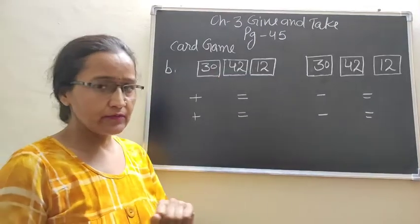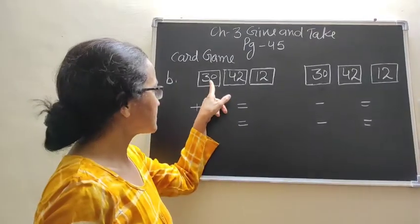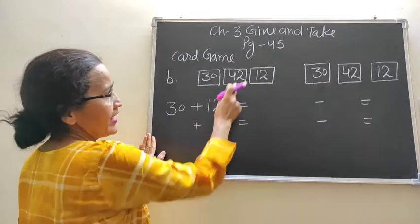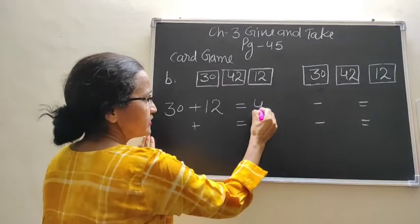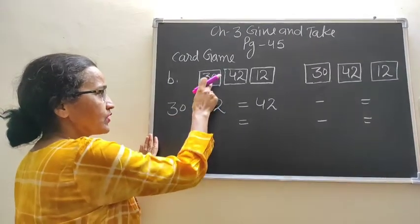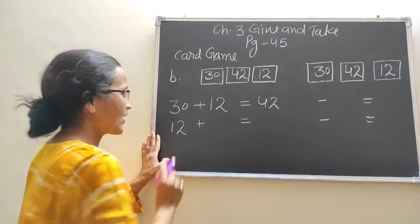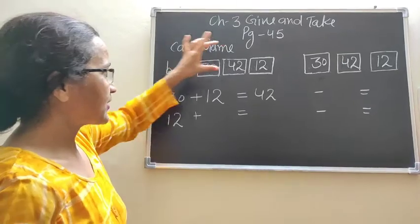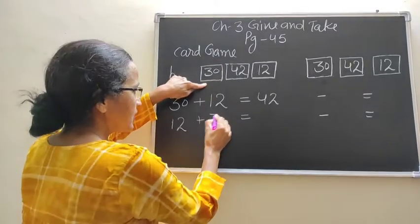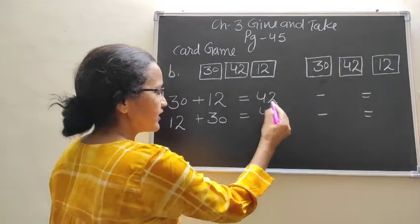Next card set is 30, 42, and 12. In the addition sign, you have to take the smallest card numbers. The smallest numbers are 30 and 12. So right here: 30 and 12. The remaining number is 42, so right here: 42. On the next arrangement, you write 12 first, then the second smallest number is 30, and the remaining is 42. So right here: 42.